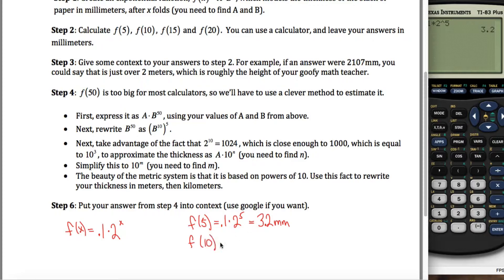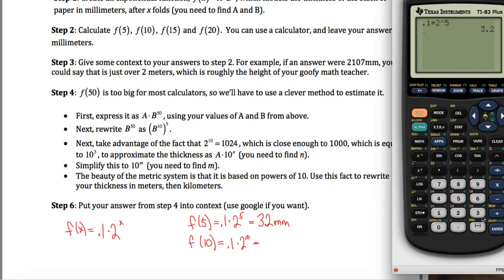I don't know, 3 millimeters, 3 millimeters is almost nothing, how about that? f of 10 would be 0.1 times 2 to the 10th power. You can kind of shortcut this if you hit second and then enter on your calculator, it brings up the last line you typed, and so I can just go and edit it, change that 5 to a 10, and I get 102.4 millimeters.